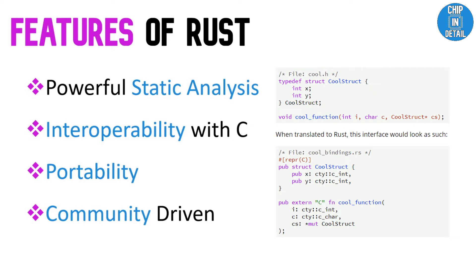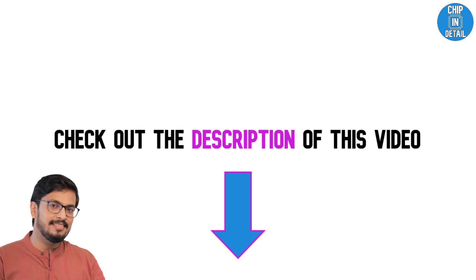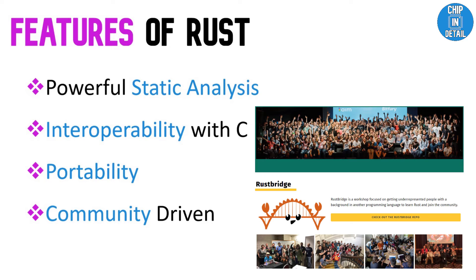Second, Interoperability with C: it is very easy to integrate Rust into your existing C codebase or leverage an existing SDK to write a Rust application. Third, Portability: Rust allows you to write a library or driver once and use it with a variety of systems ranging from very small microcontrollers to powerful single-board computers. This is possible due to the presence of the hardware abstraction layer (HAL). Fourth, Community Driven: as part of the Rust open-source project, support for embedded systems is driven by a best-in-class open-source community with support from commercial partners.